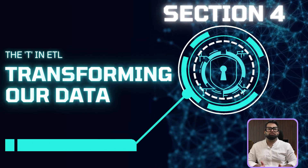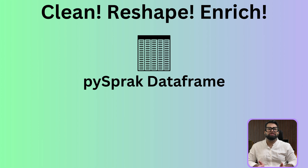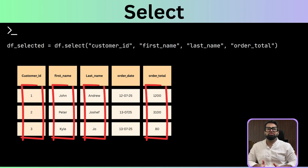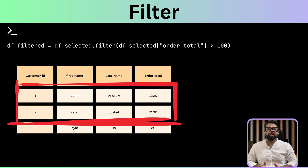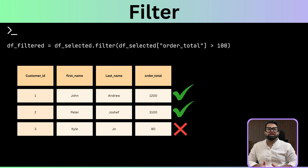Raw data is almost never perfect. Our job is to clean it, reshape it, and enrich it until it's actually valuable. PySpark DataFrames have a whole suite of functions for these kinds of transformations. Let's start with something easy: our source data might have more columns than we actually need. We can use the .select transformation to pick just the columns we want to keep — this creates a new DataFrame that only has those chosen columns. Next, let's filter out data. Maybe we only want orders for more than $100. We can do that with the .filter transformation, which tells Spark to look at the order total column and only keep rows where the value is greater than 100.